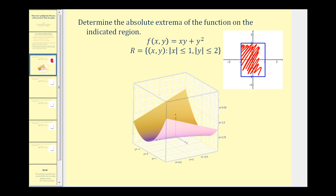So we're only considering the surface defined by f(x,y) on this region bounded by a rectangle. When we talk about the boundary, there are two vertical boundaries and two horizontal boundaries. The right boundary is x equals one, the left is x equals negative one, the top is y equals two, and the bottom is y equals negative two. Here we see the graph of the surface on the defined region — the highest point represents the absolute max and the lowest point the absolute minimum.